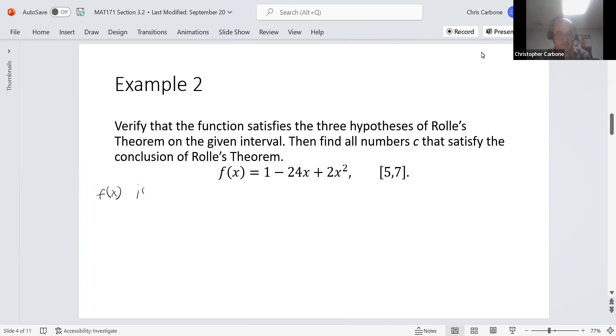So f of x is a polynomial, so it is continuous and differentiable. Because of that, we're fine with those first two. We could see that if we put in five into our function, we get negative sixty-nine. If we put in seven into the function, we also get negative sixty-nine. So the two equal, we're also fine with that as well. So all three of those conditions are met.